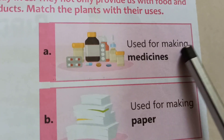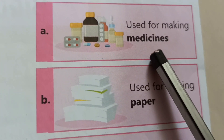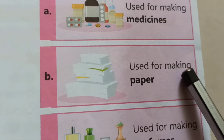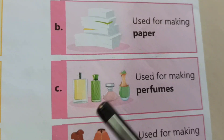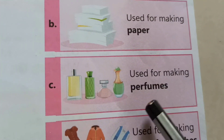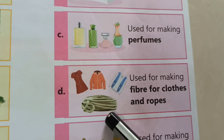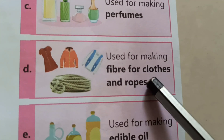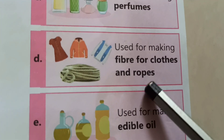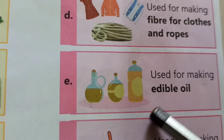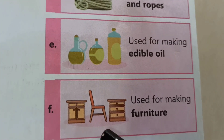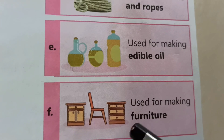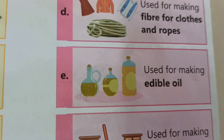First one: use for making medicines. Second B: use for making paper. C: use for making perfumes. D: use for making fiber for cloths and ropes. Next: use for making edible oil. And last one: use for making furniture.